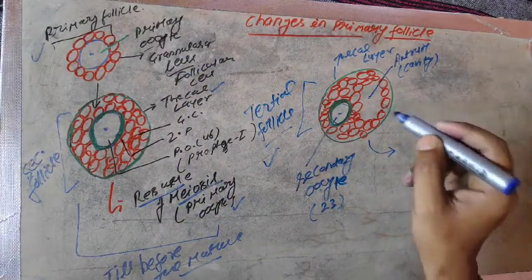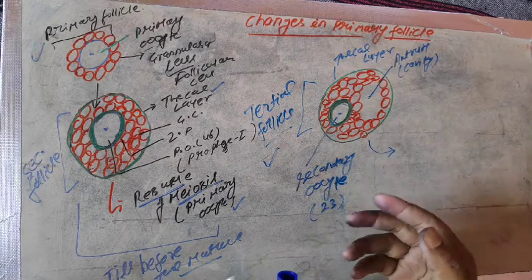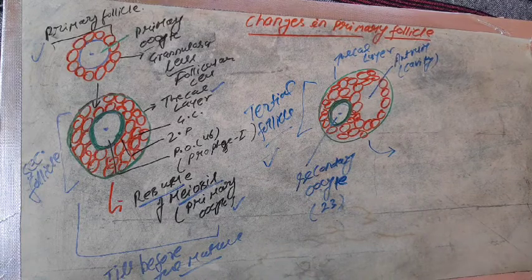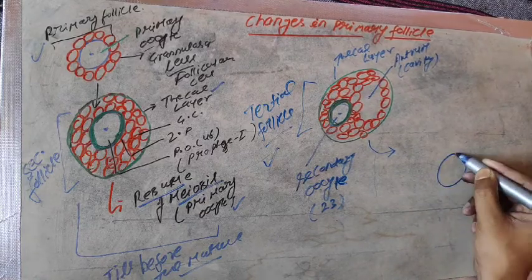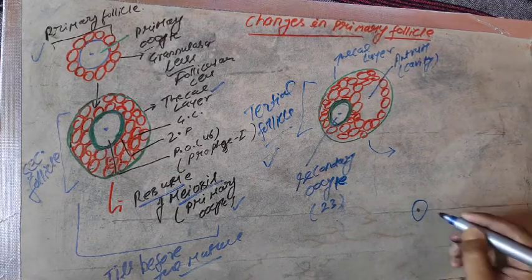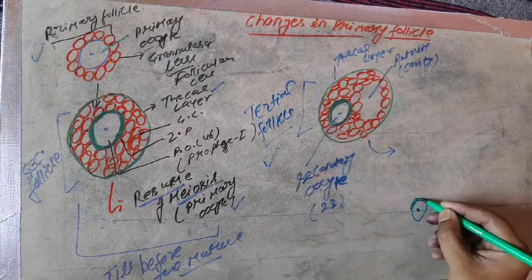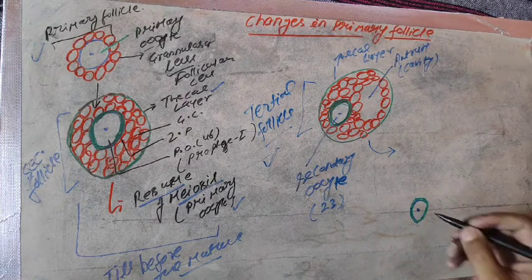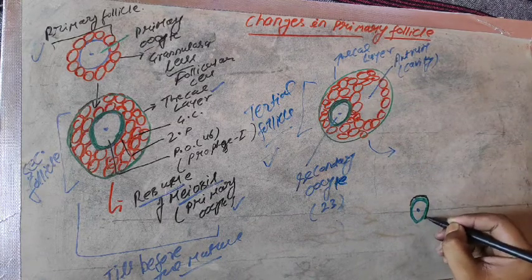Now, back to the maturity of the tertiary follicles. When tertiary follicles mature, very important characteristics develop. The secondary oocytes remain as usual, and around the secondary oocytes, a very important layer develops — that layer is the zona pellucida. Outside that is the corona radiata.